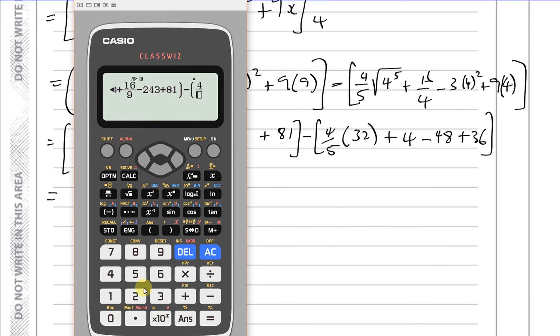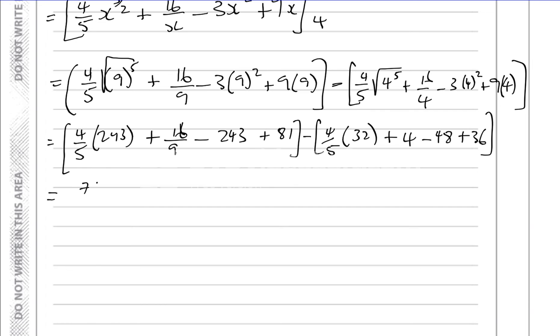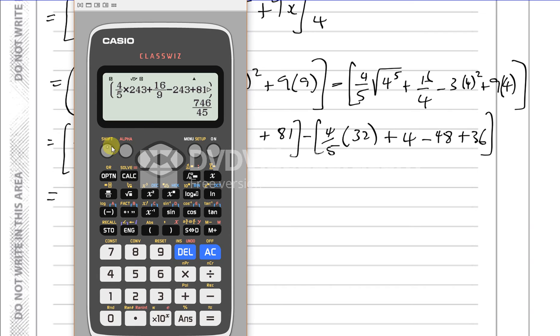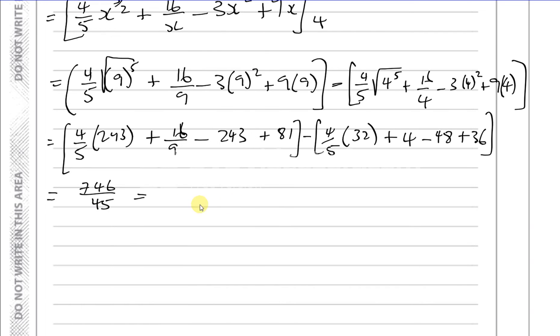Plus 16 over 9, minus 243 plus 81, close that bracket and I've got to take away from that and I'm going to have 4 fifths times 32 plus 4 minus 48 plus 36, close the bracket.